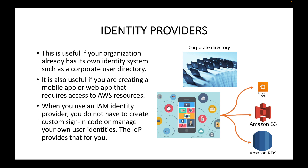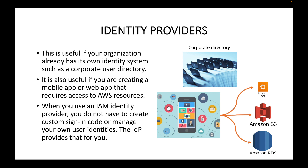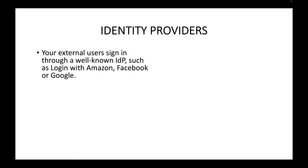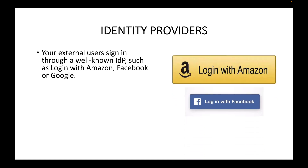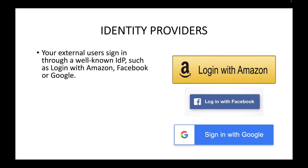When you use an IAM identity provider, you do not have to create custom sign-in code or manage your own user identities — the IDP, which stands for identity provider, provides all that for you. Your external users can sign in through a well-known IDP such as Login with Amazon, Login with Facebook, or Login with Google. Just like you might sign into a new application using your existing Google account, you can do the same with your AWS account.